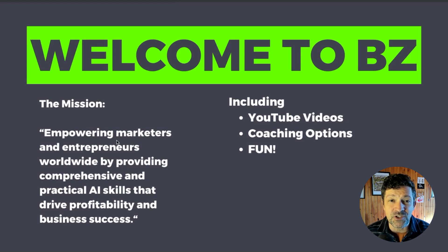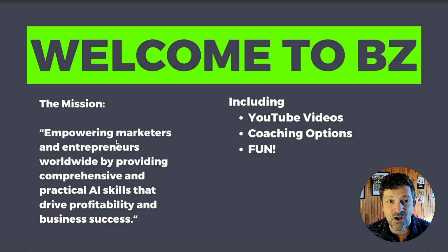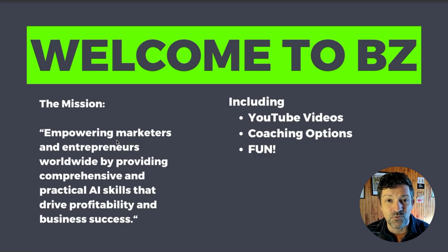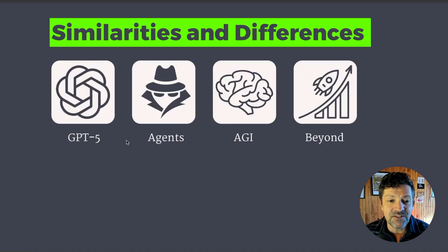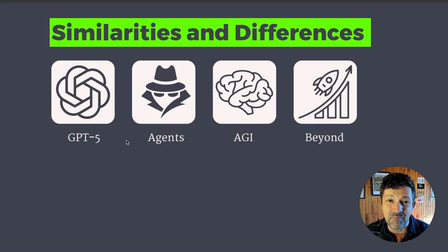I've got a link in the description to a cheat sheet for this video — I make these for almost all of my videos and have dozens of them. If you're getting something out of these videos, please consider supporting me on Patreon and getting access to all of that, as well as some code and one-on-one coaching options. So diving right into the similarities and differences between GPT-5, Agents, AGI, and even what might be coming beyond.